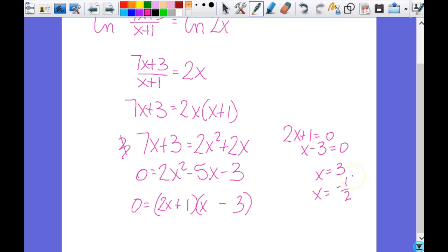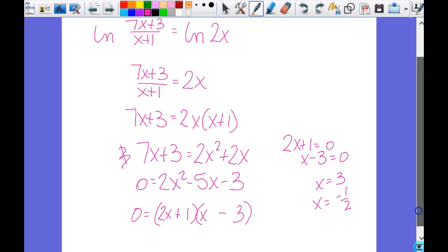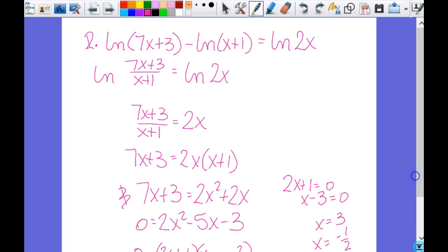So this is part of my solution set, but I have to check them. So I've got to check the 3 and the negative 1 half. So when I come up here, I get the natural log of 7 times 3 plus 3 minus the natural log of 3 plus 1 equals the natural log of 2 times 3. So is all that going to be okay inside there, what I'm taking the logs of? Positive, positive, positive, and not 0? We're good? So the 3 works.